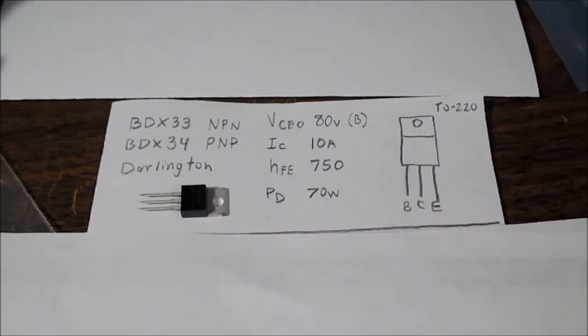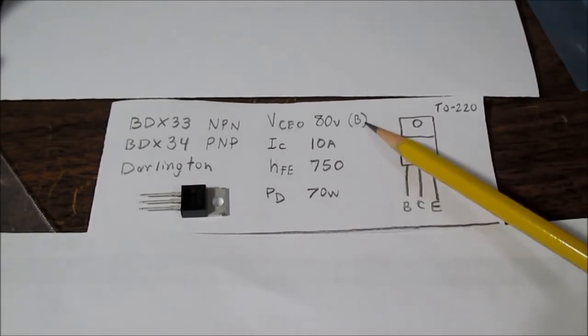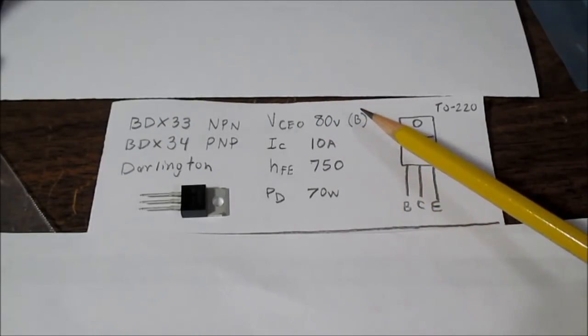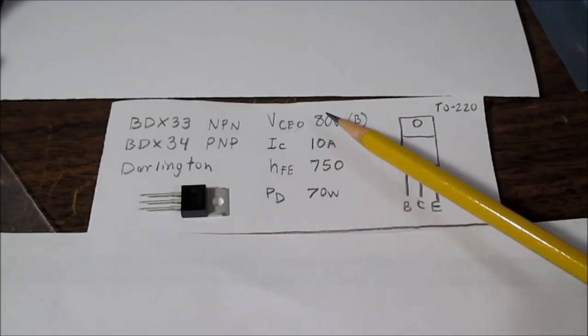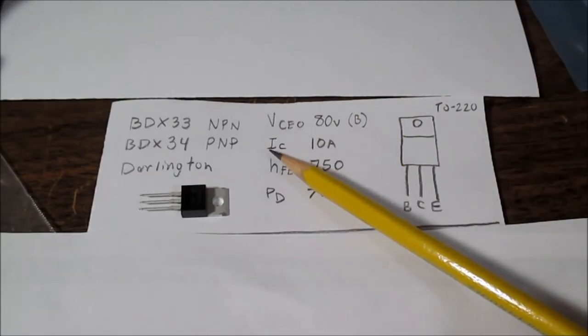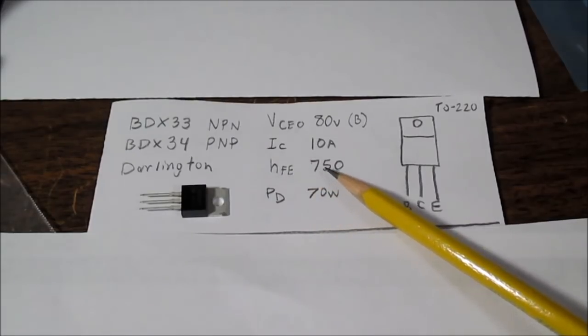Now we'll take a look at a Darlington transistor, the BDX33 NPN. And it has a complimentary version too, the BDX34 PNP. These have various suffixes for the type of voltage rating. I think they go up to 100 volts with the C version. But I believe I have the B version here of 80 volts. Fairly decent collector current at 10 amps. And a pretty high gain of 750.